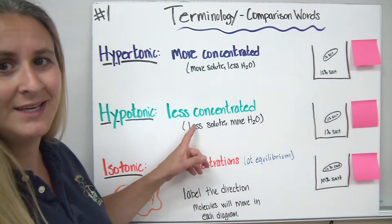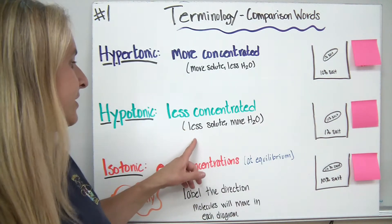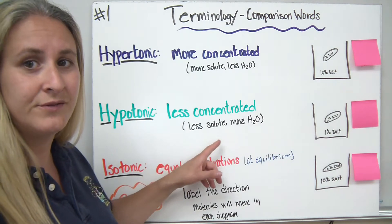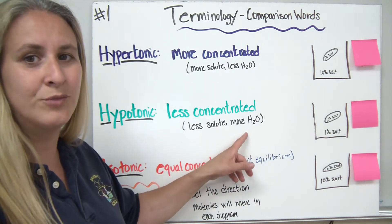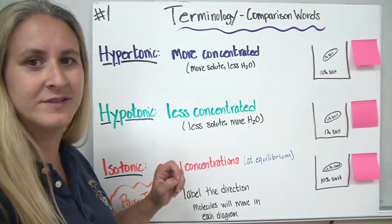A hypotonic solution is less concentrated. So there's less solute, fewer things dissolved, which would mean that there's more water compared to the amount of the solute.